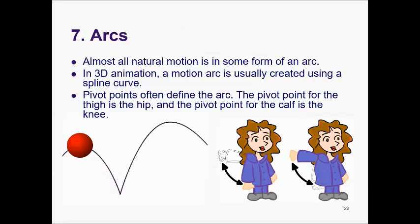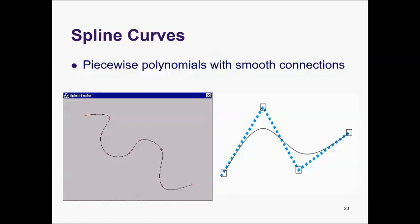Principle number seven is arcs. Almost all natural motion follows some form of an arc. In 3D animation, a motion arc is usually created using a spline curve. Pivot points often define the arc — the pivot point for the thigh is the hip, and the pivot point for the calf is the knee. The spline curve shows movement with smooth piecewise polynomial connections.